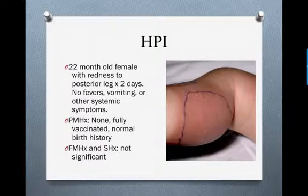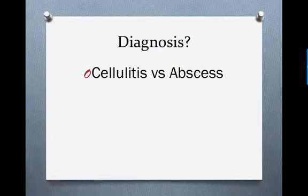Our case is a 22-month-old female coming in with redness to the back of her leg. No systemic symptoms, no medical problems. On exam, she has a painful, erythematous, warm leg. You think she probably has cellulitis and want to treat her with antibiotics, but you're wondering whether or not there's an abscess present, as physical exam is not always the most accurate way to determine this. An abscess would require an incision and drainage, which is a painful procedure and may require sedation in this child. So basically, we're asking: cellulitis versus abscess.